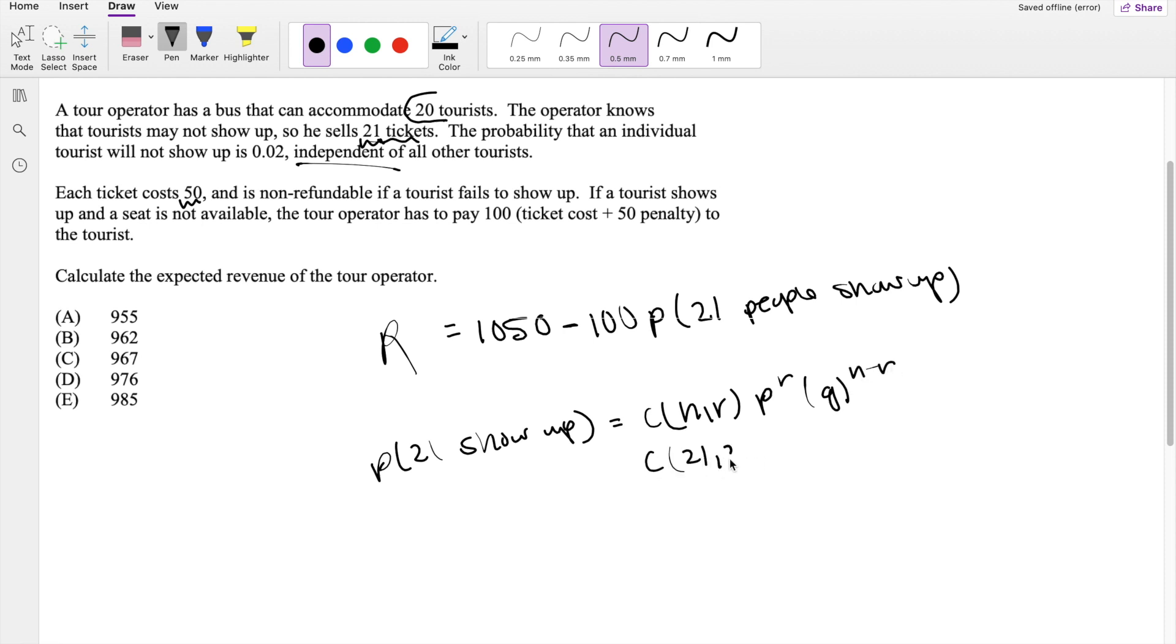Out of 21 people, what is the probability of all 21 show up? So what is the probability of success? Well, probability of success is all of them showing up. So if the probability of not showing up is 0.02, then 1 minus 0.02 is equal to 0.98. So there is a 98% chance that they will show up. And 0.02% that they won't show up.